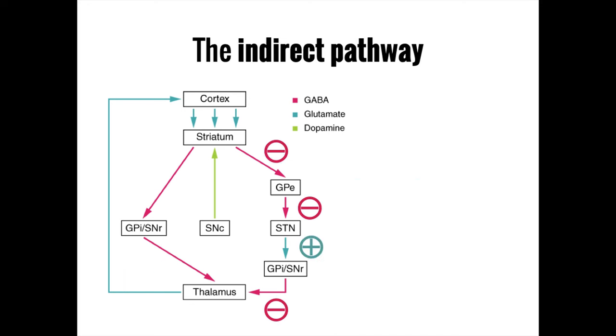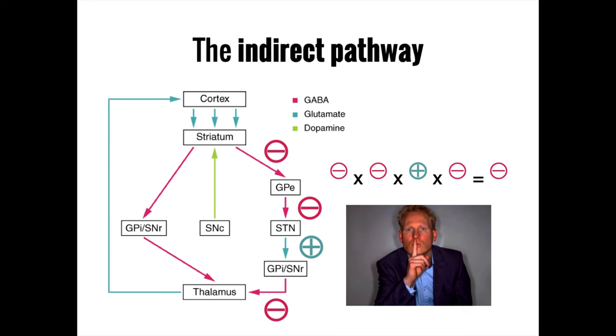In contrast, the three inhibitory neurotransmitters and one excitatory neurotransmitter in the indirect pathway follow the rules of math to produce a negative, giving the indirect pathway an overall inhibitory effect.